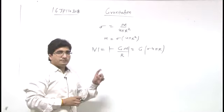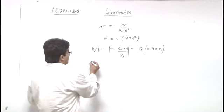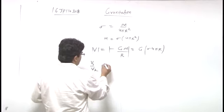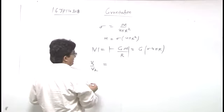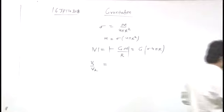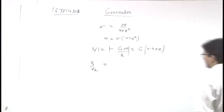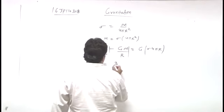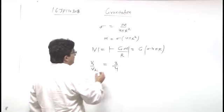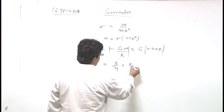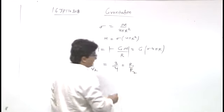The ratio is given as 3 ratio 4. So v1 by v2 equals this ratio is given as r1 by r2. It is given as 3 by 4. So r1 by r2 equals 3 by 4.